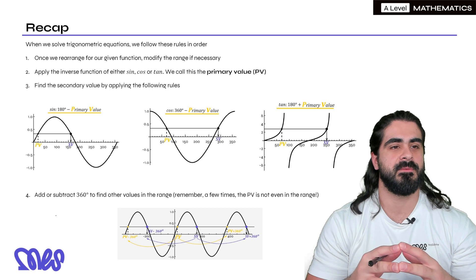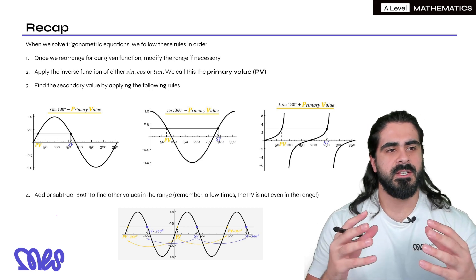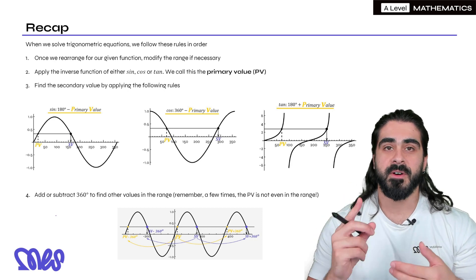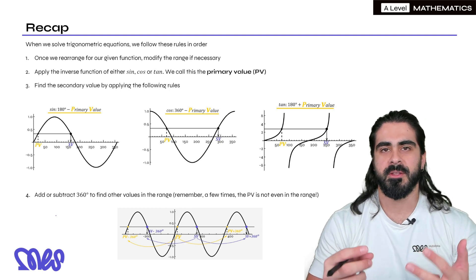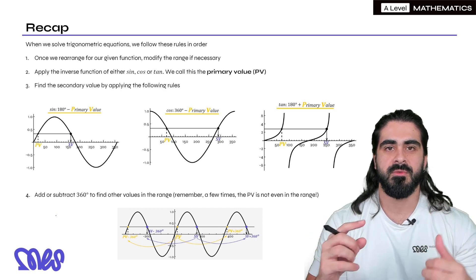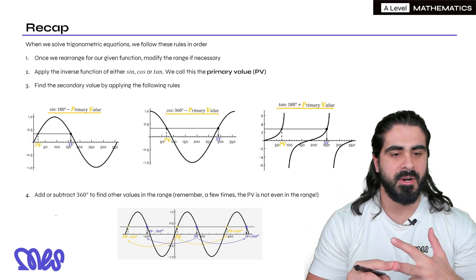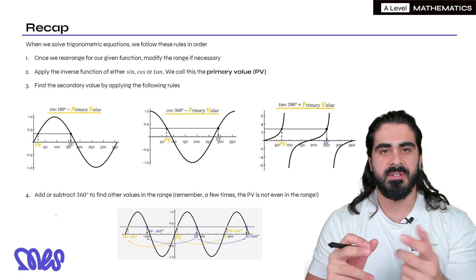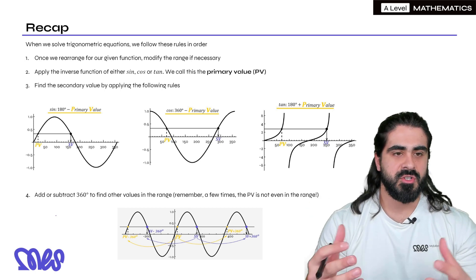Just a quick recap of what we did last lesson. When we solve trig equations we follow these rules in order. First, we rearrange for our given function, so we rearrange for either sine, cos, or tan. Then we modify the range if necessary. Then we apply the inverse function, which we call the primary value. Then we find the secondary value by applying the same rules every time: for sine 180 minus, cos 360 minus, and tan 180 plus the primary value. Finally, once you've found the PV and SV, you add or minus 360 to find all the other values within the range. Then we unmodify the range right at the very end.